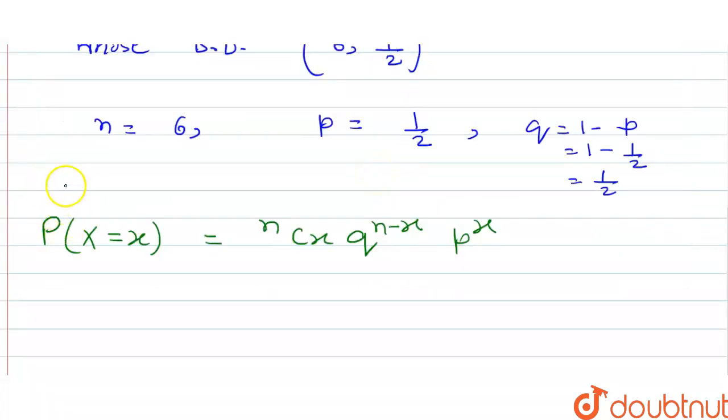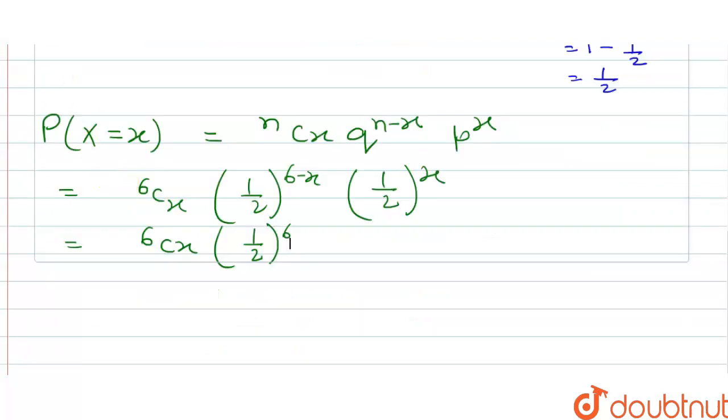Now when n equals 6, p equals 1/2, and q equals 1/2, then the value will be 6Cx times (1/2) to the power (6 minus x) times (1/2) to the power x. After simplification we got 6Cx times (1/2) to the power 6. It can be seen that P(X=x) will be maximum if 6Cx will be maximum.